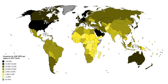Production within a country's borders, but by an enterprise owned by somebody outside the country, counts as part of its GDP but not its GNI. On the other hand, production by an enterprise located outside the country but owned by one of its citizens counts as part of its GNI but not its GDP. For example, the GNI of the USA is the value of output produced by American-owned firms, regardless of where the firms are located.